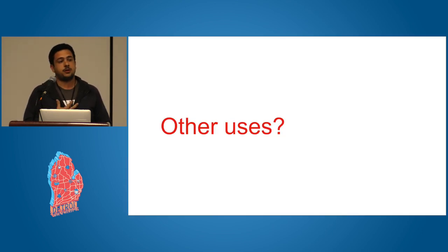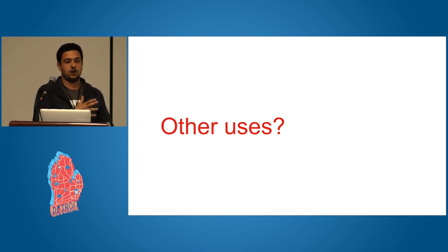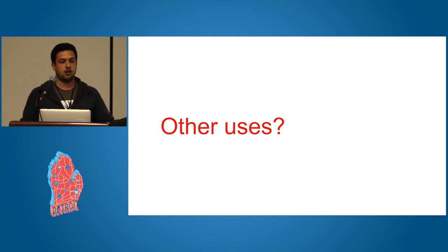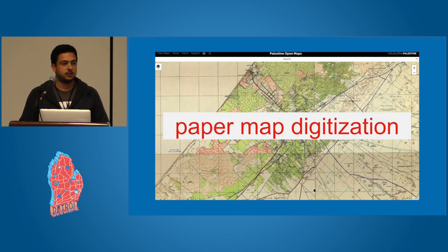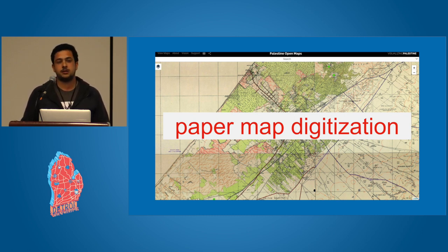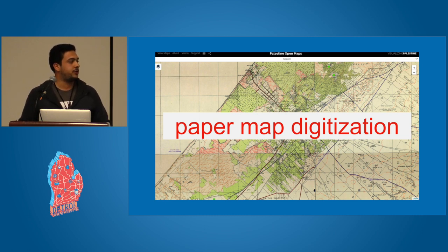We had the historical mapping use case — storing snapshots of OSM for 2012, 2018, and 2009 to analyze change across those years. But people have been using OSM Seed in the wild for other cool things too. Visualizing Palestine has paper maps they'd like to digitize that aren't going to touch OpenStreetMap, so they're doing paper map digitization and storing it in their own OSM Seed instances.